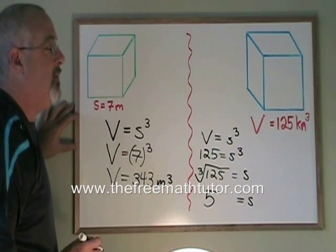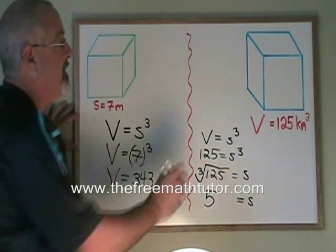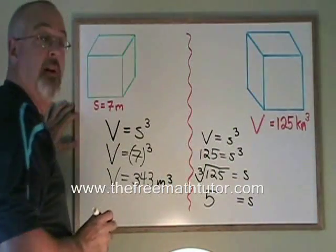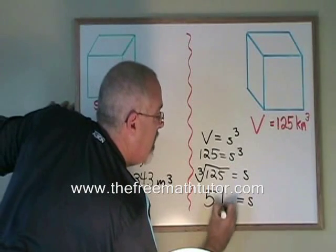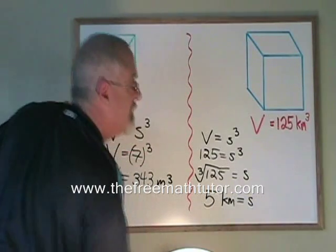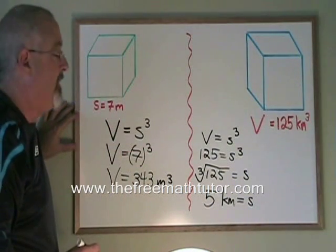All that's left is to apply the appropriate unit of measure. Since the volume of this cube was given in kilometers cubed, the side length should be given as kilometers. The side length for this cube is 5 kilometers.